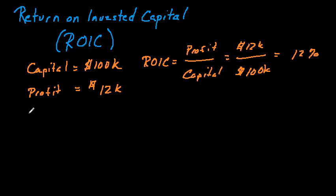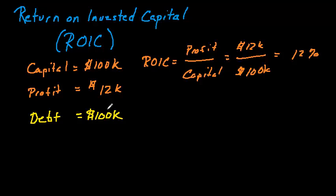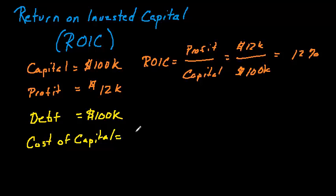Now let's take this example one step further and talk about where we got the money from. We started with a hundred thousand dollars, but we didn't say where we got that capital. Let's say we borrowed all of it — one hundred thousand dollars of debt. When we borrow money, we need to pay interest on it. There's a cost of capital — we didn't get this money for free, we have to pay for it. In this case, the cost of capital is just the interest rate, and let's say the interest rate was seven percent.